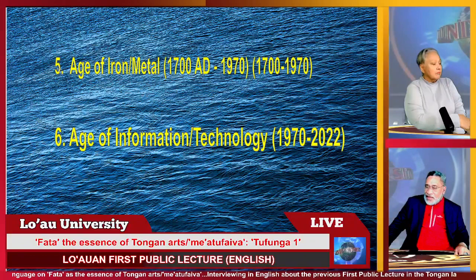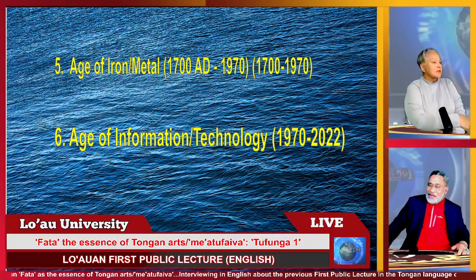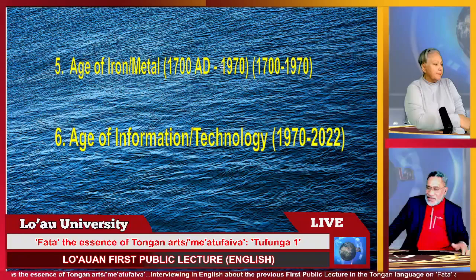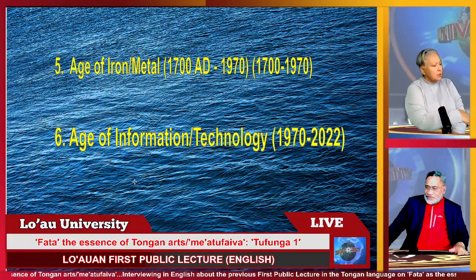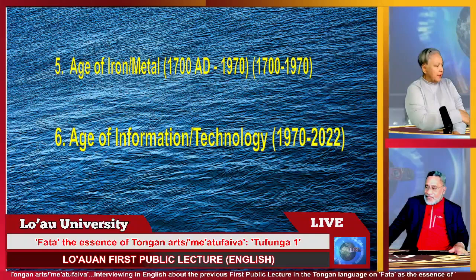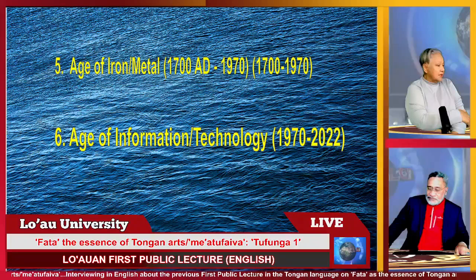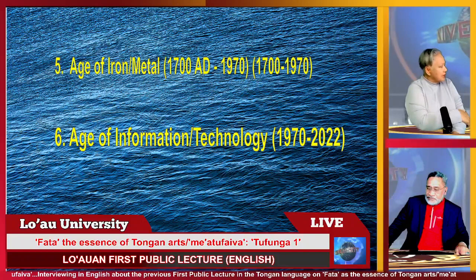Number five, Age of Iron Metal — that's when European intervention happened. It was marked strongly by the age of iron metal. Some of the early explorers from Spain and France came way before 1700 — in the 13th, 14th, 15th century — and they would have introduced iron and metal when they visited the islands. Some of those early explorers came in the 1600s.